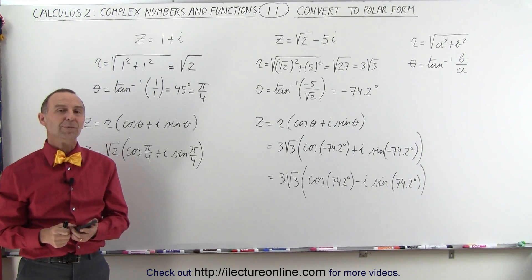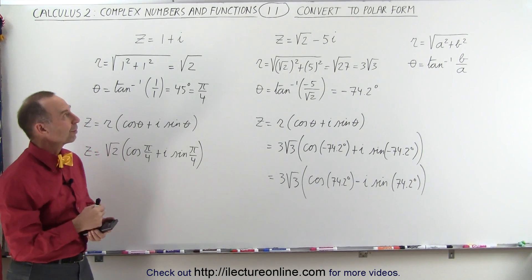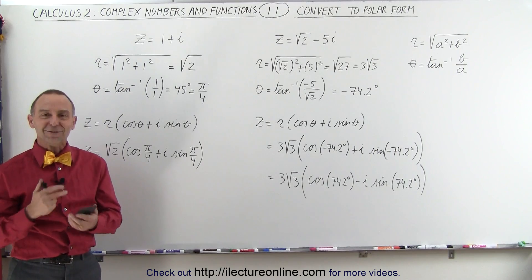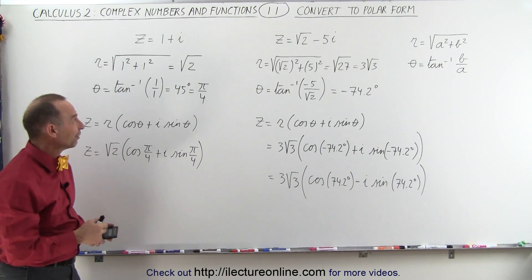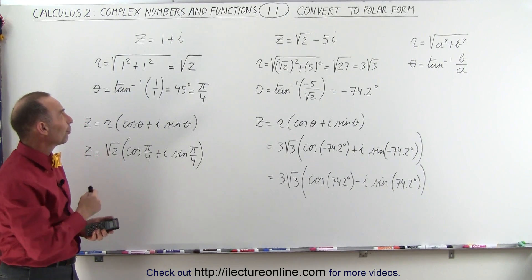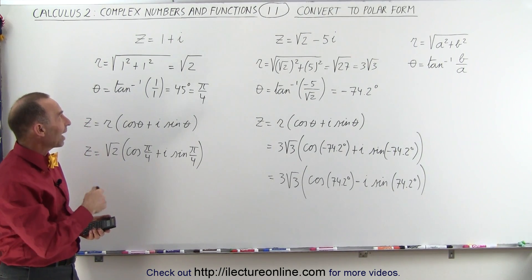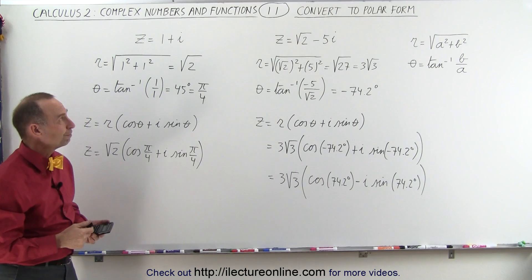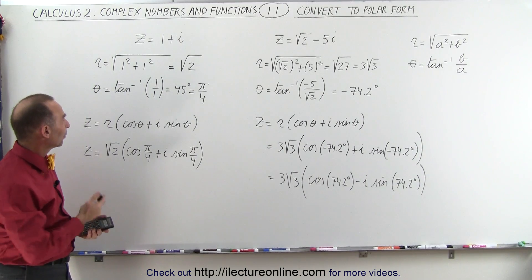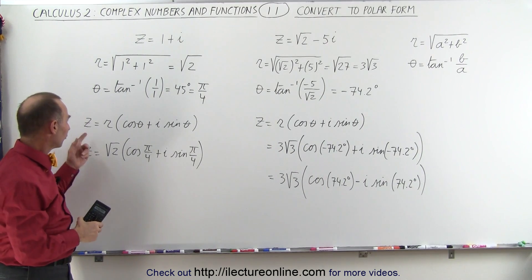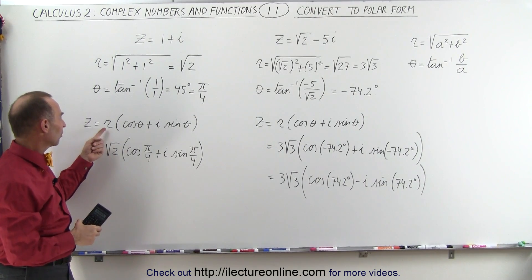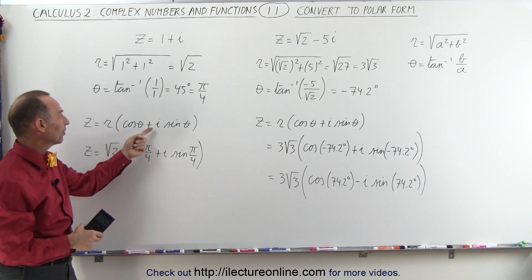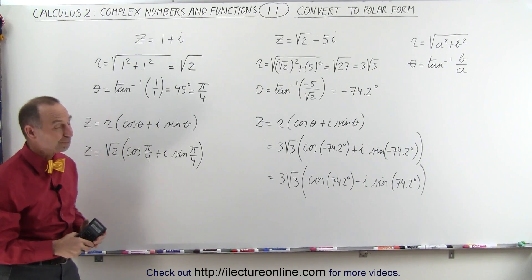And that's how we convert from a normal form z equals a plus bi to a polar form. That would then be the general form: z can be written as r times the cosine of theta plus i times the sine of theta.